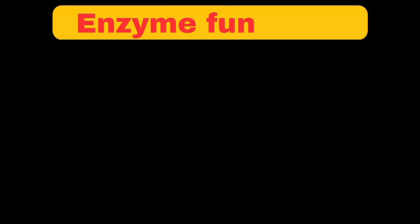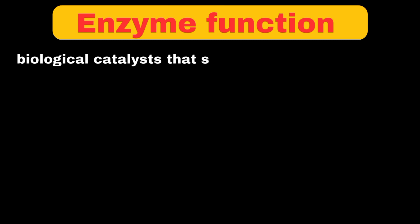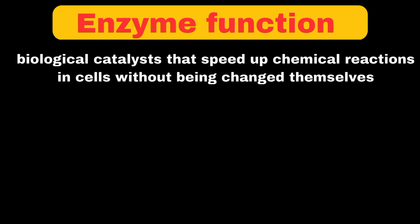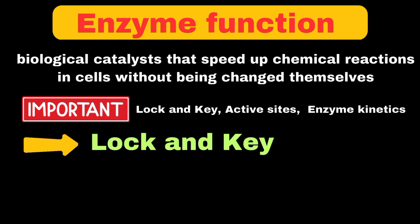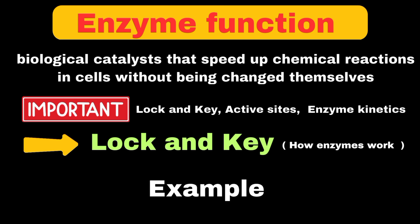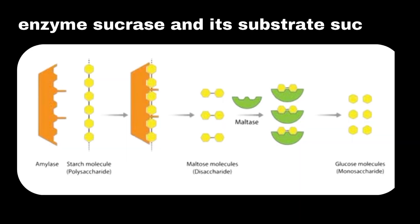Enzymes are biological catalysts that speed up chemical reactions in cells without being changed themselves. To understand how enzymes work, we look at three important concepts: the lock and key model, active sites, and enzyme kinetics. The lock and key model explains how enzymes work with specific substances called substrates. The enzyme sucrase has an active site that perfectly fits the shape of sucrose, just like a key fits into a specific lock. When sucrose enters this active site, the enzyme breaks it down into glucose and fructose much faster than would happen without the enzyme.